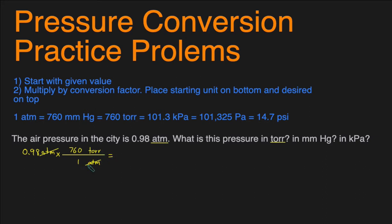So we just plug this into our calculator: 0.98 times 760, and we get 744.8 Torr. Next let's look at sig figs — we started with two sig figs, so we should have two sig figs in the answer, which makes this 740 Torr. If you're confused about sig figs, check out my sig fig videos and that will clarify things.